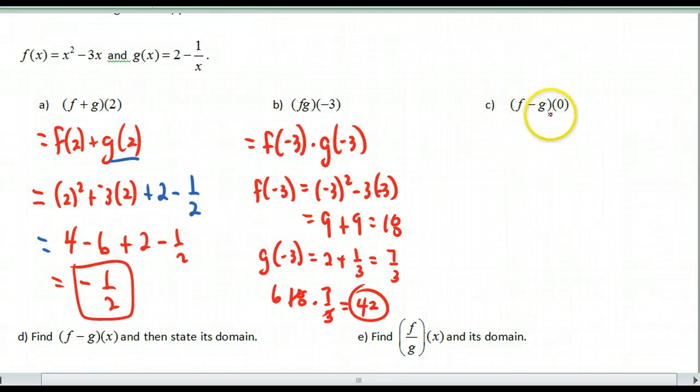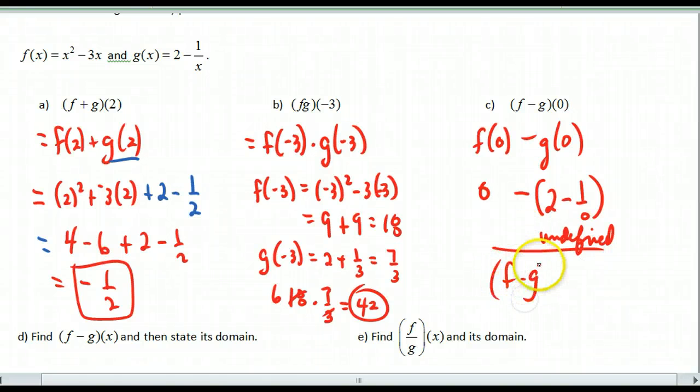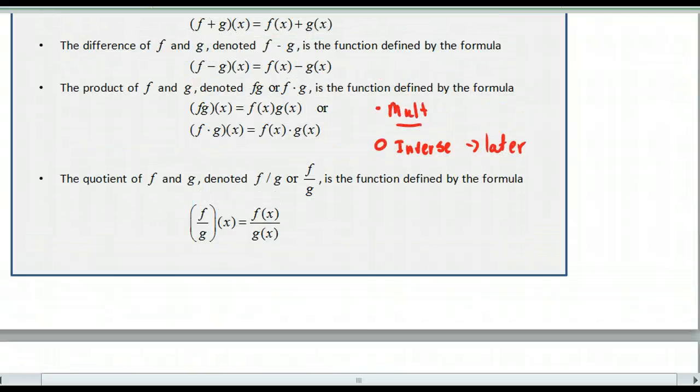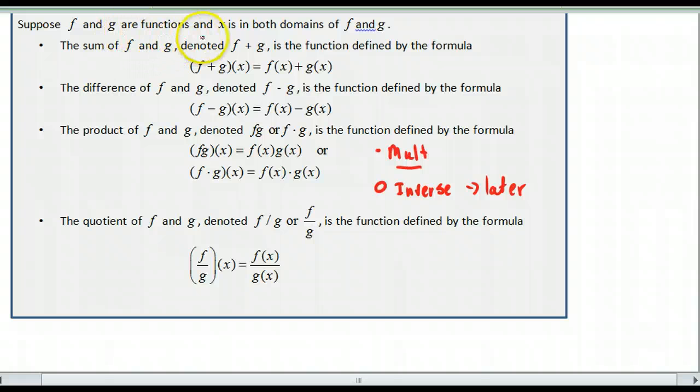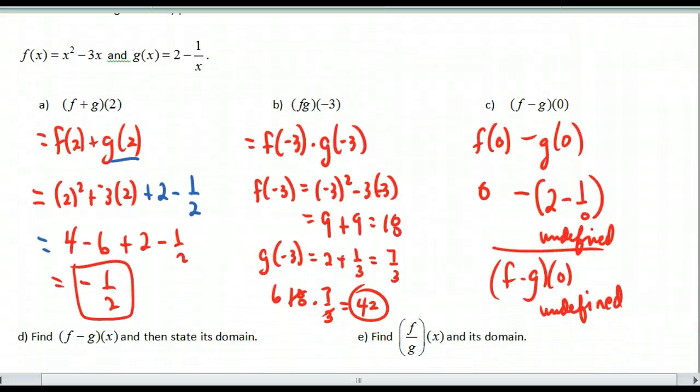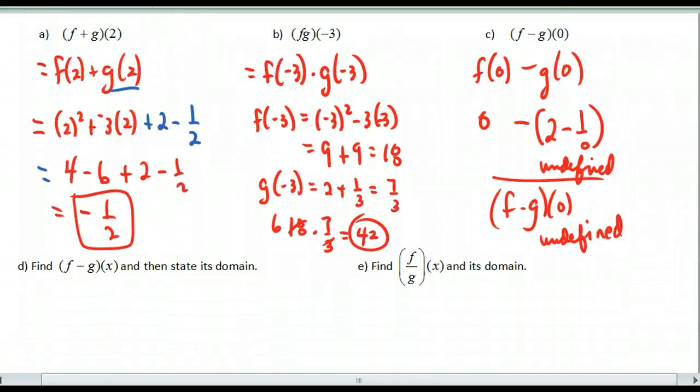Then part c, f minus g of 0. So if I start with this, I'm going to go f of 0 minus g of 0. Do you want to keep on going? Or do you see something? Well, yes, I can put in 0. I'm going to get 0. That's pretty easy. What about g of 0? What happens there? I get 2 minus 1 over 0. What happens with this? Well, that's undefined. Well, if it's undefined for one of these functions, then it's going to be undefined overall. So f minus g of 0 is undefined. And if you go back to the last page, it does say that it has to be defined for both functions. And so f and g are functions and x is in both domains of f and g. Well, this particular x value is not in the domain for g. So then overall, it's going to be undefined. It doesn't work.